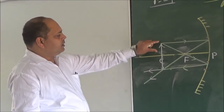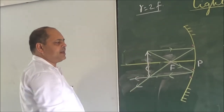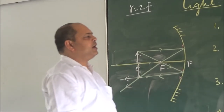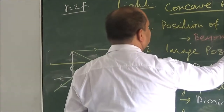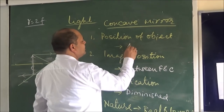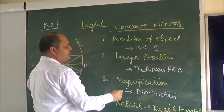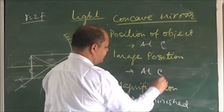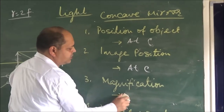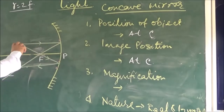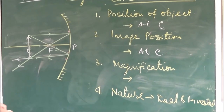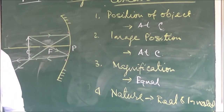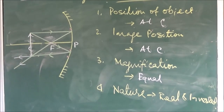So, comparing the object size and the image size, they are equal — the image is the same size as the object. The image is in front of the mirror and can be obtained on the screen. Position of object: at C. Image position: at C. Magnification: equal — that is, magnification equals one. Nature: real and inverted.